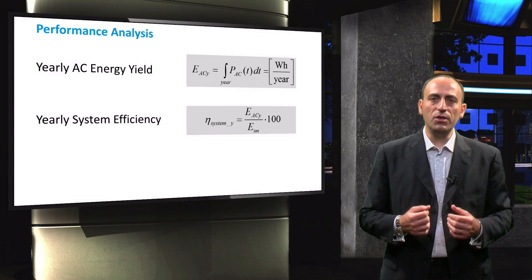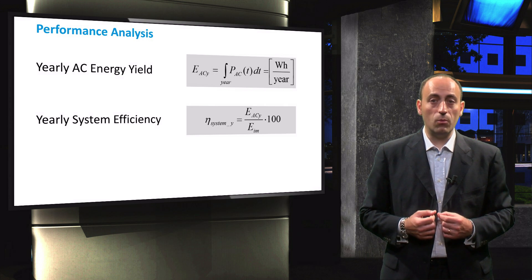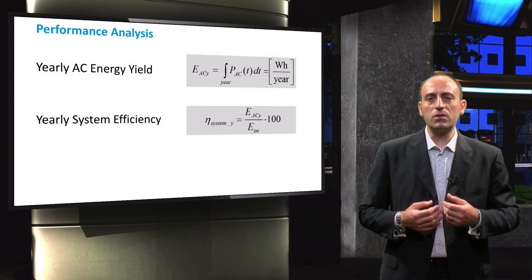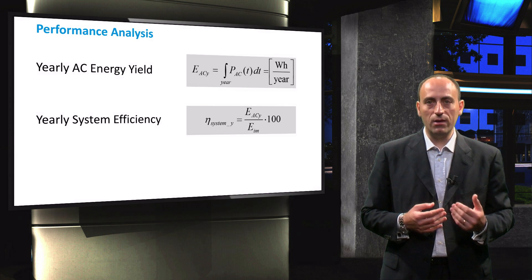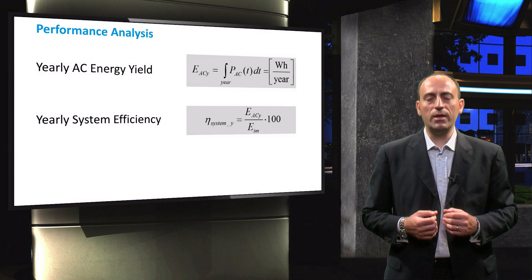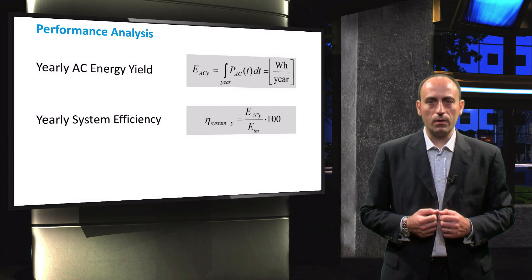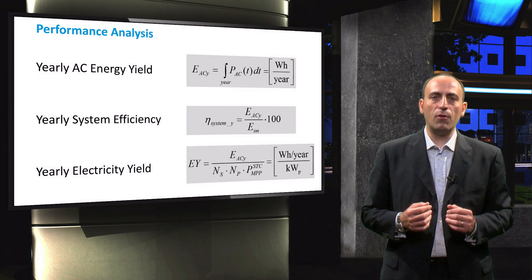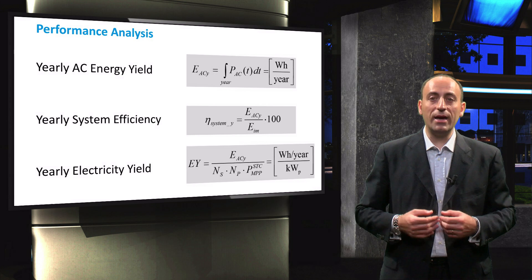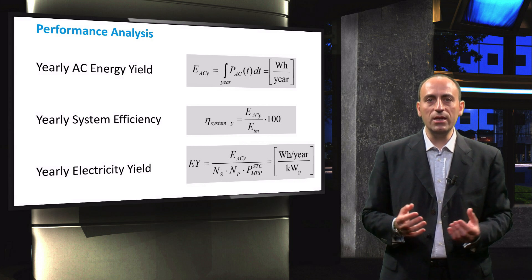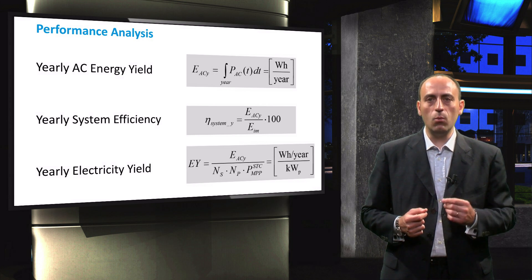The yearly efficiency of the system, eta system Y, is calculated by considering the ratio between the AC yearly energy yield and the total irradiance reaching the module. Finally, the system performance can be expressed by an additional parameter that describes the yearly electricity yield, EY.